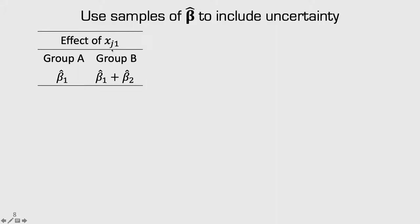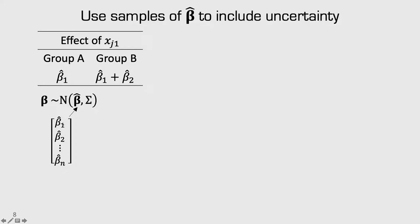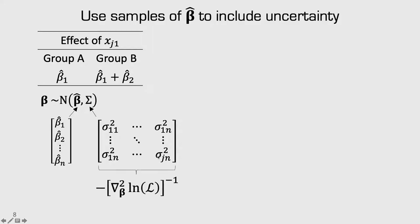Going back to the simpler model showing the effect of x1 between groups A and B — if we just wanted a point estimate, we know that for group A the coefficient is beta 1, and for group B it's beta 1 plus beta 2. But both coefficients have uncertainty around them. To test for a statistically significant difference, we need confidence intervals. We can do this using simulation — just like when computing willingness to pay or market shares with uncertainty — using draws of beta 1 and beta 2. Our beta coefficients are normally distributed with mean equal to our estimates and a variance-covariance matrix from the negative inverse of the Hessian.